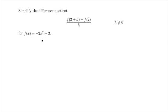In this first problem, we are asked to simplify the difference quotient given the function f equals negative 2x squared plus 3. Now the first thing to do is to identify what this function does to a given value x. So given an input x, it first squares the x value, multiplies by negative 2, and then adds 3.